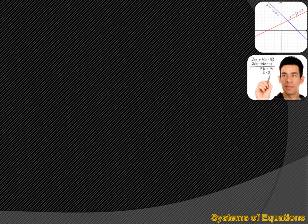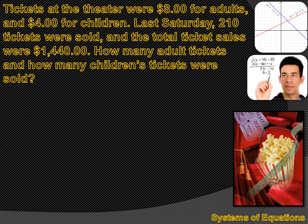What is a system of equations? A system is going to probably have more than one equation in it — at least two equations that relate to each other in some fashion. Let's use a word problem to help us understand. Tickets at the theater were $8 for adults and $4 for children. Last Saturday, 210 tickets were sold, and the total ticket sales were $1,440. How many adult tickets and how many children's tickets were sold?